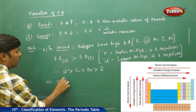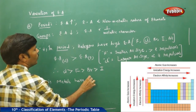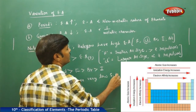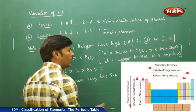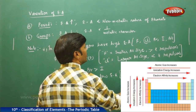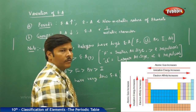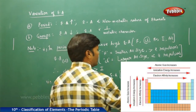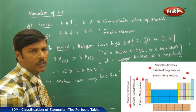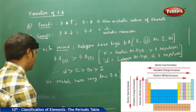Metals have very low electron affinity. For example, cesium is a metal which has approximately 0.1 electron affinity. This is because metals cannot gain electrons the way non-metals do — that is the reason metals have very low electron affinity.